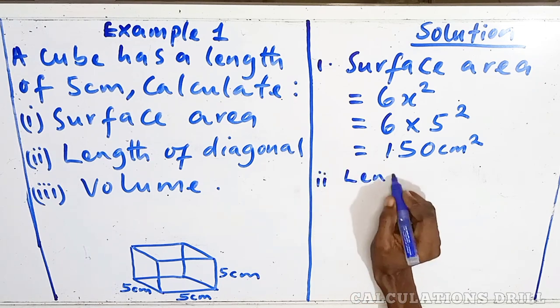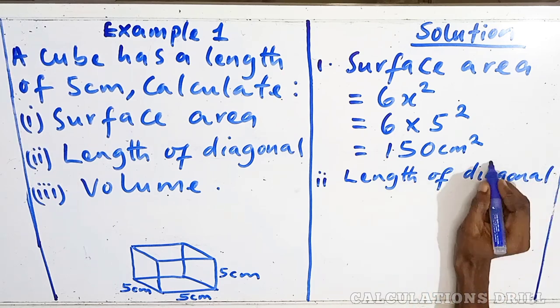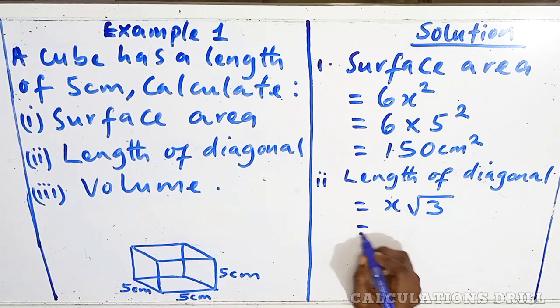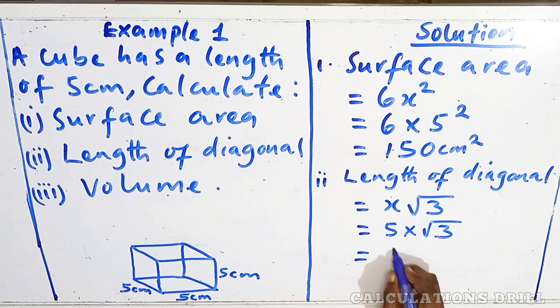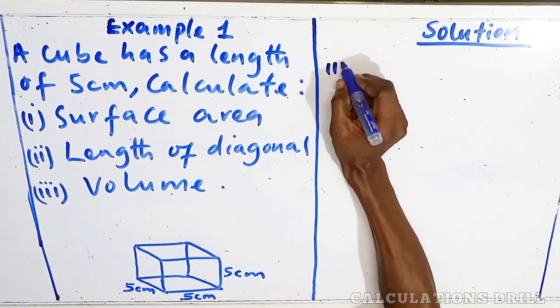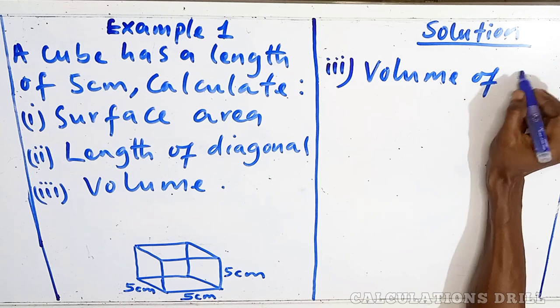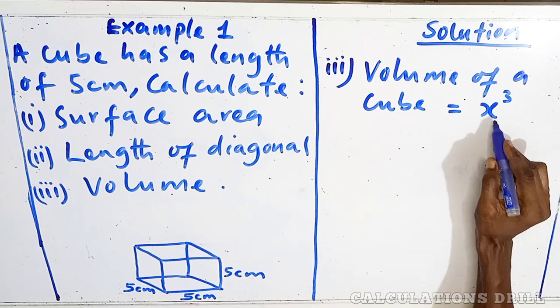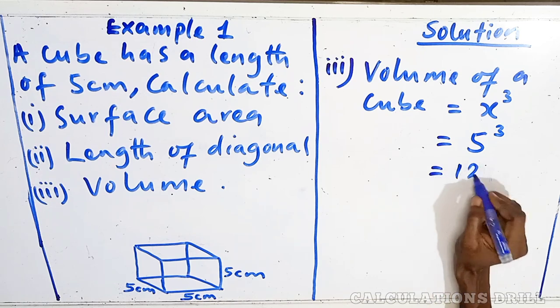The second one is the length of diagonal. The length of diagonal from the formula is x(√3). Then, 5 times √3. And that will give us 8.7 cm. Now, let's look at the volume. The formula for volume of a cube is equal to x³. Remember, x is the length. So, 5³, that gives us 125 cm³.